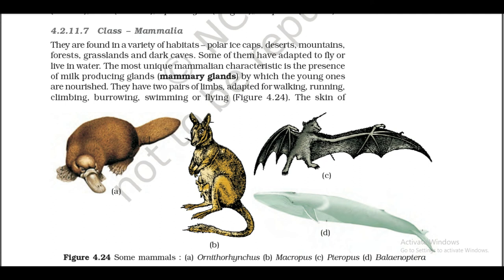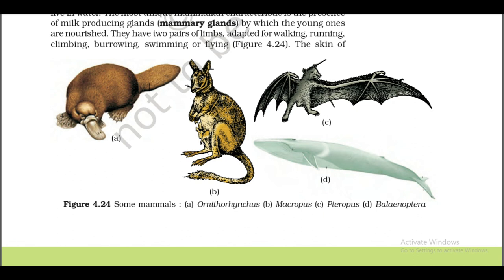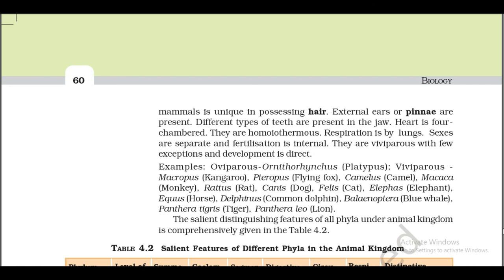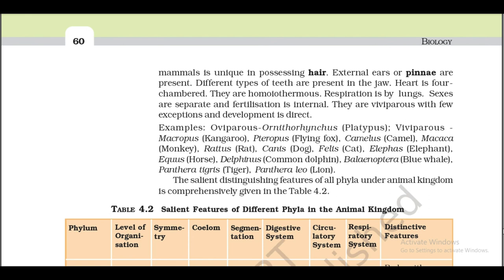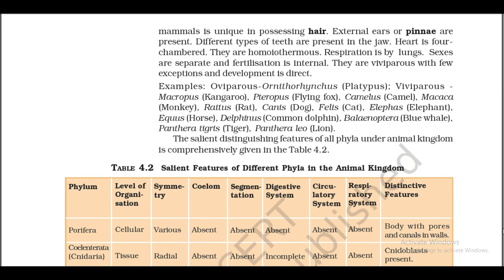4.2.11.7 Class Mammalia. They are found in a variety of habitats: polar ice caps, deserts, mountains, forests, grasslands, and dark caves. Some have adapted to fly or live in water. The most unique mammalian characteristic is the presence of milk-producing glands — mammary glands — by which the young ones are nourished. They have two pairs of limbs adapted for walking, running, climbing, burrowing, swimming, or flying (Figure 4.24). The skin of mammals is unique in possessing hair. External ears or pinnae are present. Different types of teeth are present in the jaws. Heart is four-chambered. They are homeothermous. Respiration is by lungs. Sexes are separate and fertilization is internal. They are viviparous with few exceptions, and development is direct.